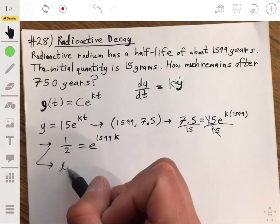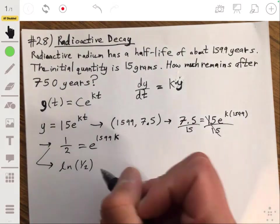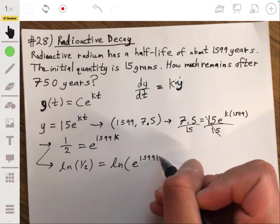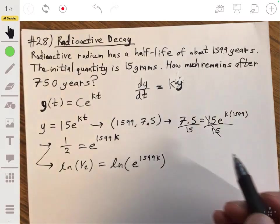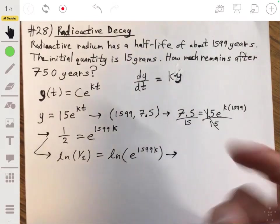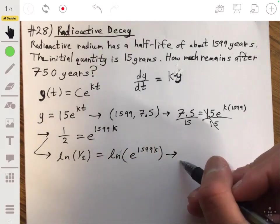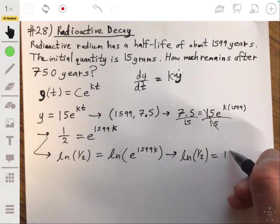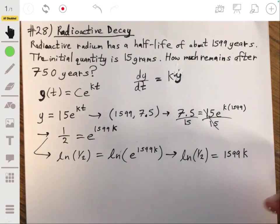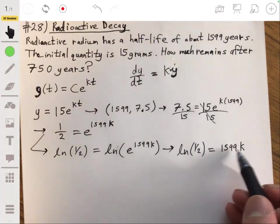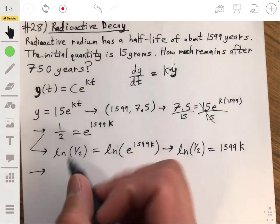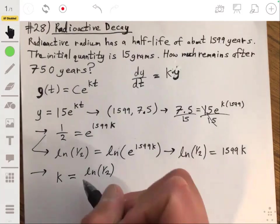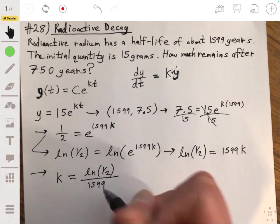We'll get 1/2 being equal to e to the 1599k. From here, we can take the natural log of each side. The natural log of 1/2 will be equal to the natural log of e to the 1599k. Using the natural log property, we have the natural log of 1/2 is just equal to 1599k. Solve for k by just dividing both sides by 1599. So k will be equal to the natural log of 1/2 over 1599.